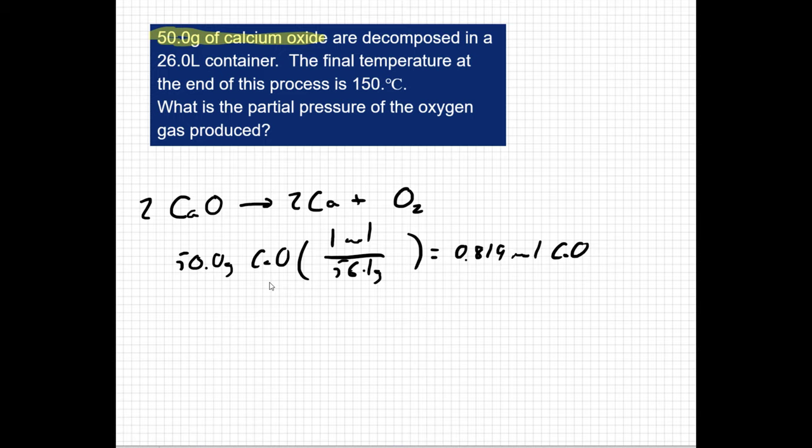So then we use the number of moles of my limiting reactant to look for my product. This question is specifically looking for oxygen. So I'm going to use my 0.819 moles of CaO, and then my ratio of oxygen to CaO is that there is one oxygen for every 2 CaO. So I get 0.446 moles of O2. I kept some extra digits in my calculator, so that's why my number might be a little bit different than yours, but we should be in the same ballpark.